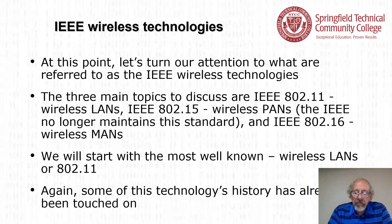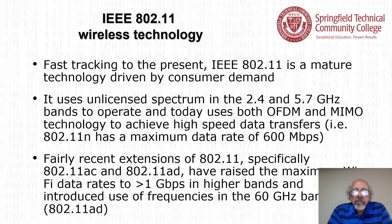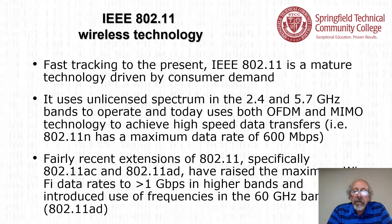Some of this technology's history has already been touched on. Fast tracking to the present, 802.11 is a mature technology driven by consumer demand. It uses unlicensed spectrum in the 2.4 and 5.7 gigahertz bands and today uses both OFDM and MIMO technology to achieve high speed data transfers. 802.11n has a maximum data rate of 600 megabits per second. Extensions 802.11ac and 802.11ad have raised the maximum Wi-Fi data rates to over 1 gigabit per second, with 802.11ad introducing frequencies in the 60 gigahertz band.